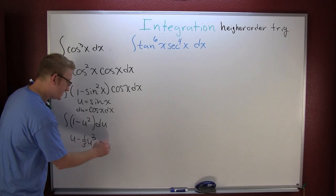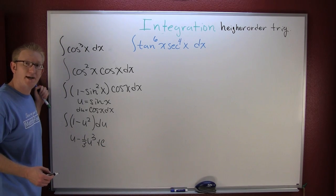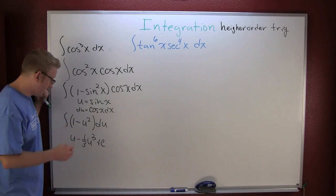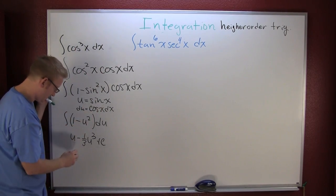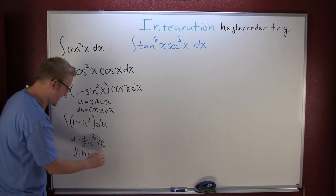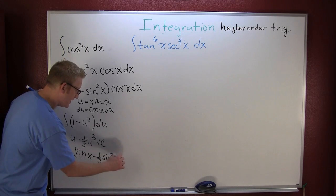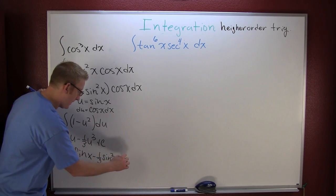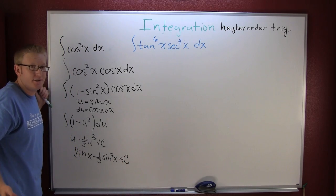One last thing to do: back-sub u. So then my u was sine x minus one third sine to the third x plus c, and you're done.